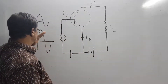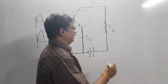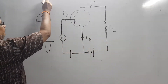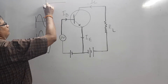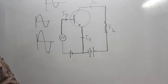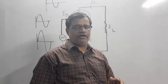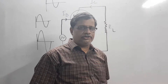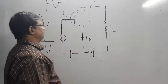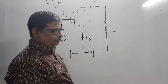Faithful amplification means that both the positive and negative half-cycles are amplified equally. On the other hand, if I amplify a signal and end up with an output where only the positive half-cycle is amplified and the negative half-cycle is not amplified at all, this is called unfaithful amplification.